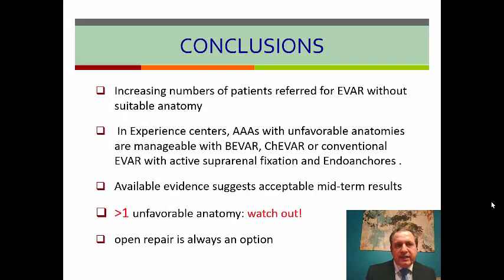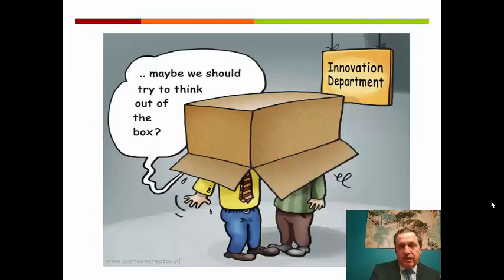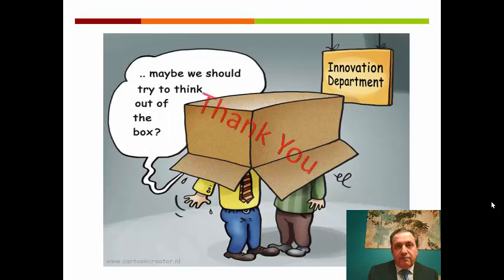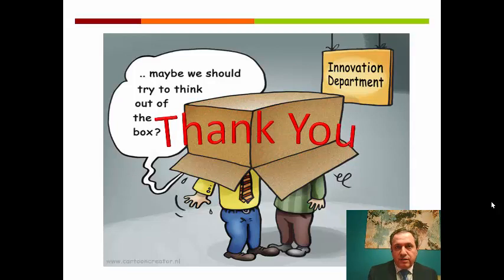In conclusion, ladies and gentlemen, we are seeing an increased number of patients referred to us with triple-A without suitable anatomy. But in an experienced center, triple-A with unfavorable anatomy is manageable with FEVAR, CHEVAR, or conventional EVAR with active suprarenal fixation and endo anchors. Available evidence suggests acceptable mid-term results. If you have more than one unfavorable anatomy, you have to watch out — open repair is always an option. Thank you very much for inviting me to your workshop, and I'll be ready to take any questions.